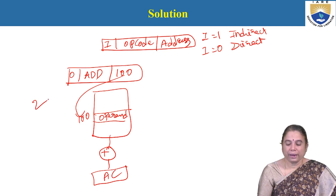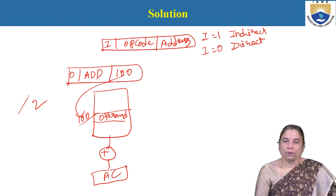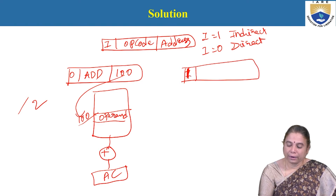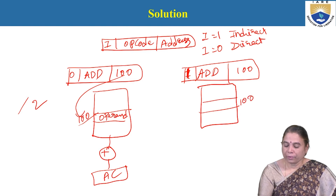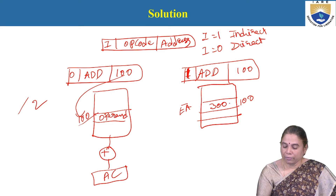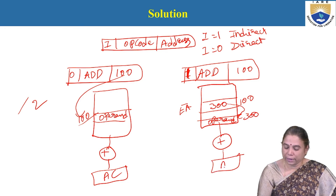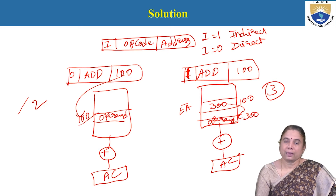In direct addressing, only two memory references are needed: one to read the instruction and one to read the operand. In indirect addressing, i = 1 and the address (e.g., 100) is specified in the instruction. At memory location 100, an effective address (e.g., 300) is stored, and at location 300, the actual operand is available. Therefore, three memory references are required. That is the difference between direct and indirect addressing.